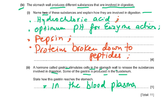So to summarise: hydrochloric acid provides the optimum pH for enzyme action in the stomach. The enzyme produced in the stomach is pepsin, and pepsin breaks down protein into peptides.